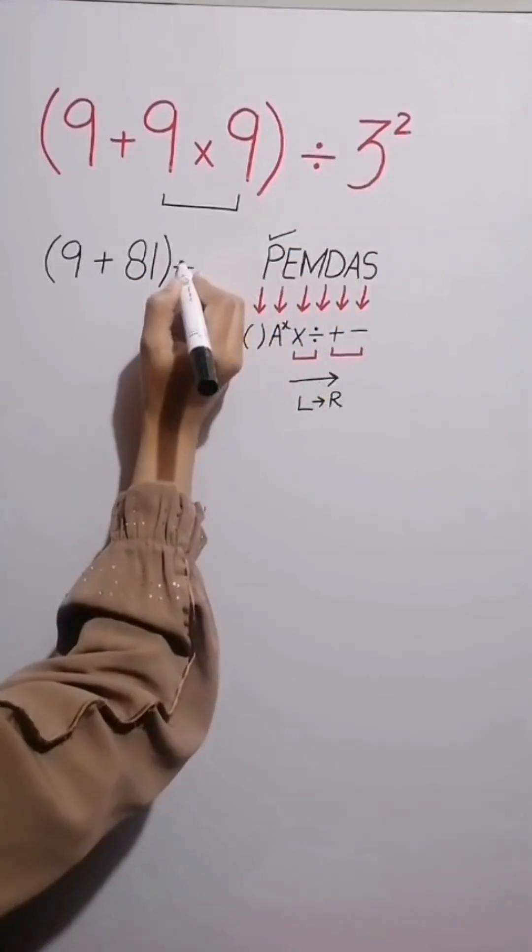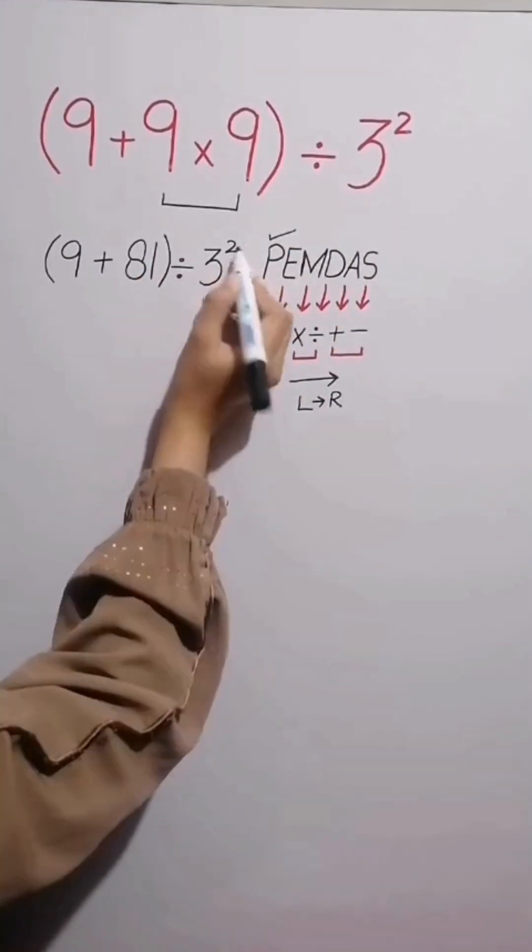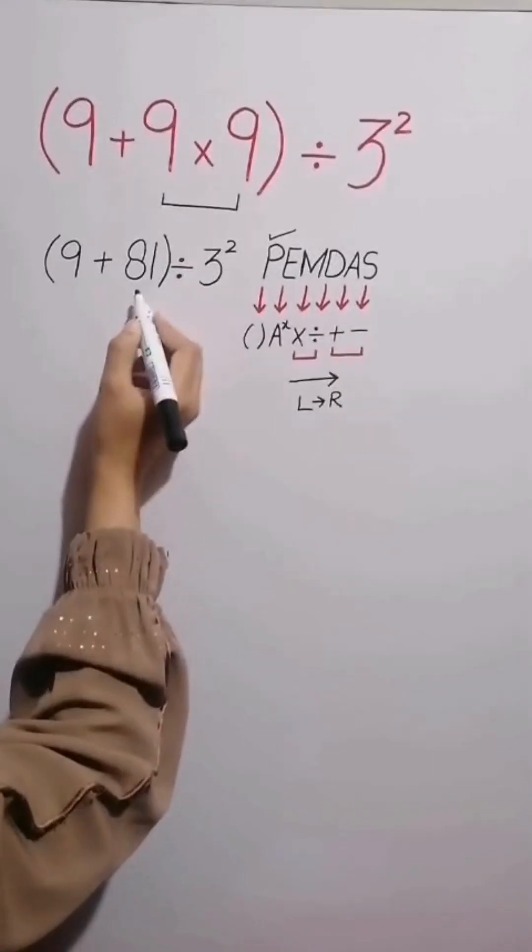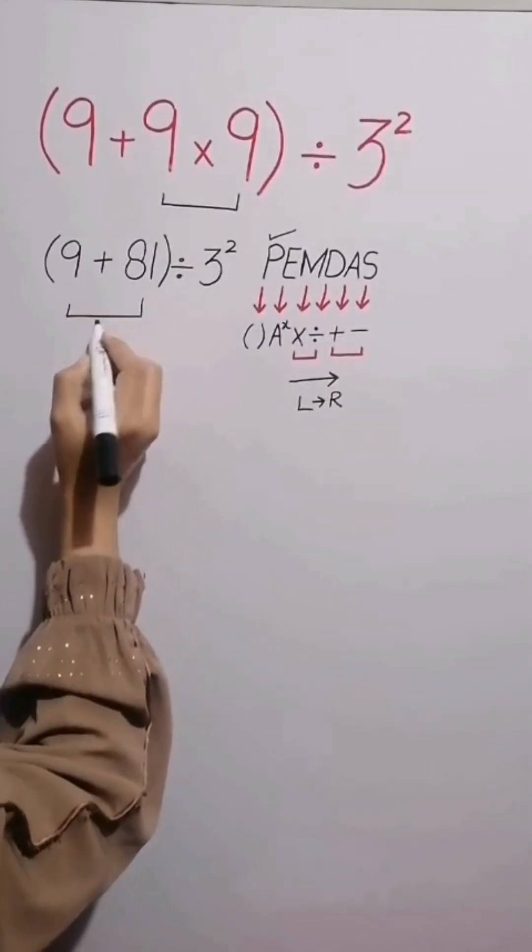And then 3 to the power of 2. Again we simplify the parentheses. 9 plus 81 gives us 90.